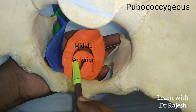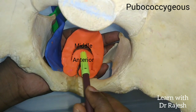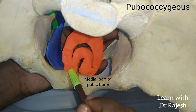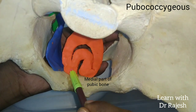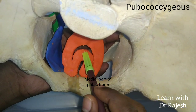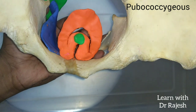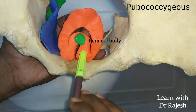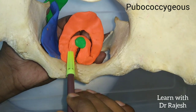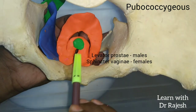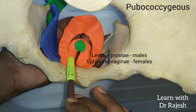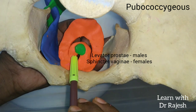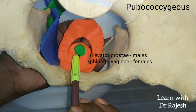The anterior fibers will be looping around the prostate in males and around the vagina in females. These fibers take origin from the pelvic surface of the pubic bone on either side and get inserted into the perineal body at the center. In males, since it loops over the prostate, this muscle is called the levator prostate. In females, since it surrounds the vagina, it is called the sphincter vaginae.